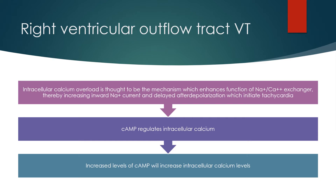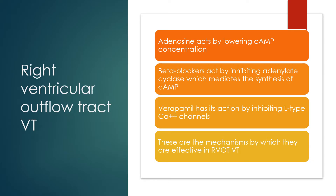Intracellular calcium overload is thought to be the mechanism, which enhances the function of the sodium-calcium exchanger, thereby increasing inward sodium current and delayed after-depolarizations which initiate tachycardia. Cyclic AMP regulates intracellular calcium; increased levels of cyclic AMP will increase intracellular calcium levels. Adenosine acts by lowering cyclic AMP concentration. Beta blockers act by inhibiting adenylate cyclase, which mediates the synthesis of cyclic AMP. Verapamil has its action by inhibiting L-type calcium channels. These are the mechanisms by which these drugs are effective in RVOT VT.